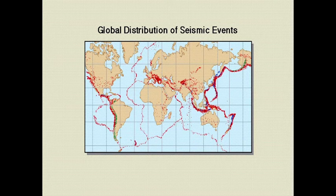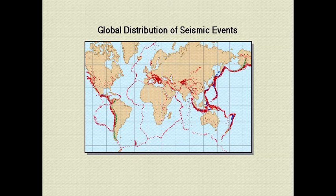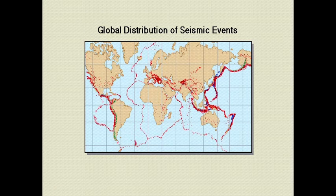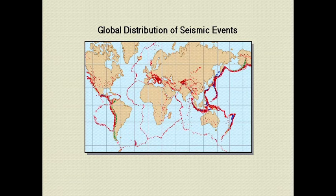Recall that if you mapped the distribution of earthquakes on planet Earth, they were not in any random pattern — rather they were in very specific places. Looking at this map of seismic events, every dot represents a place where an earthquake has occurred. Notice the prominent linear features, especially the ones in the middle of the ocean basins.